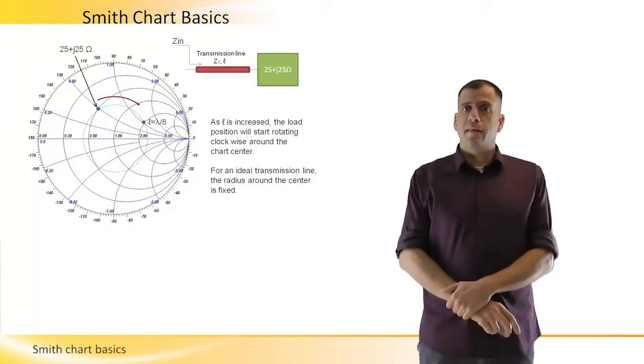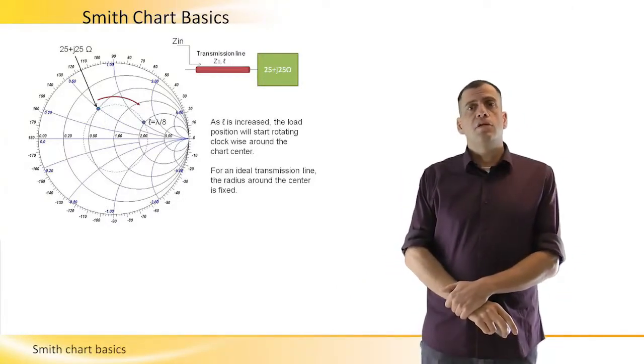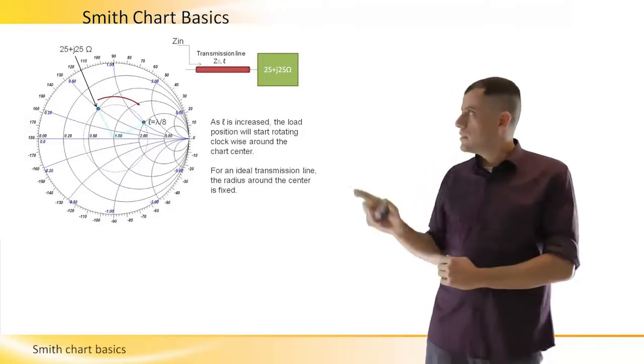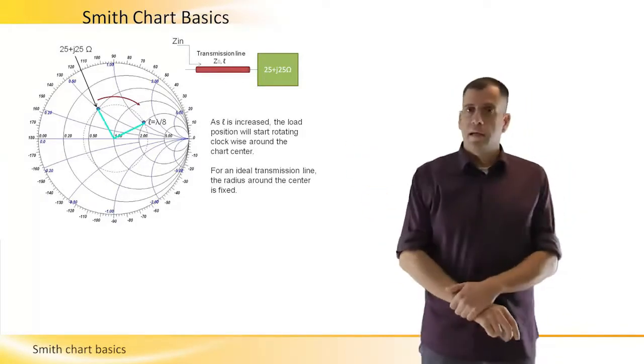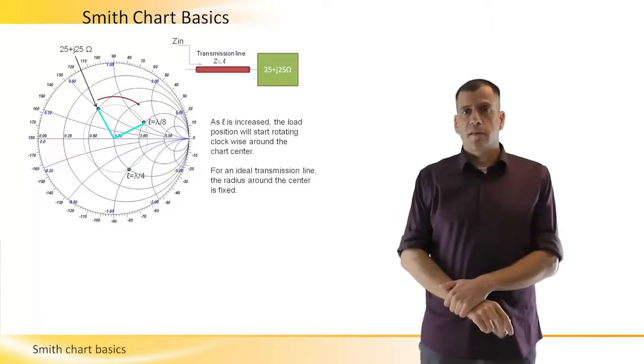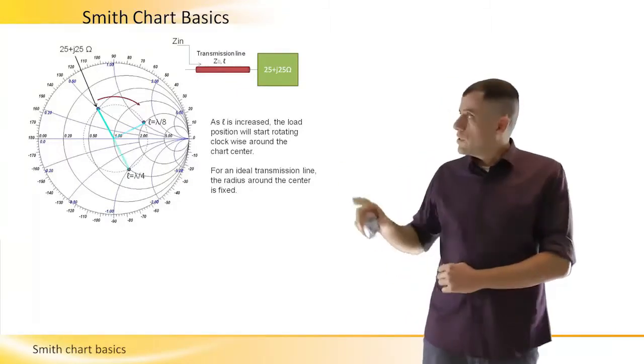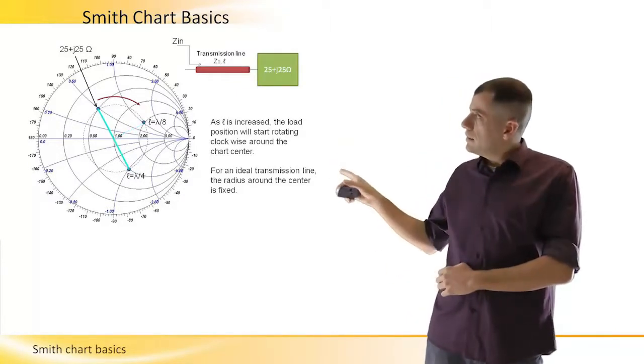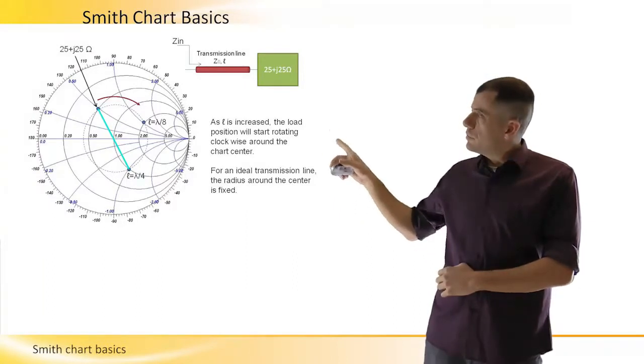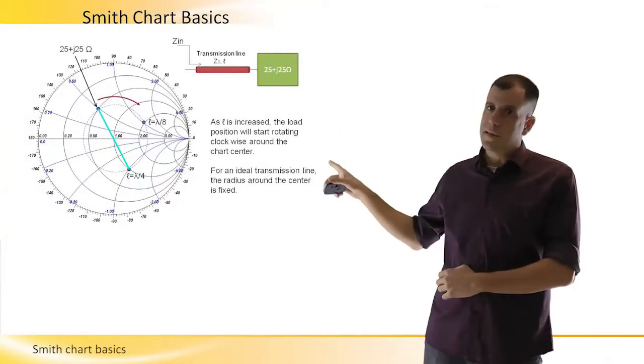After an eighth wavelength, the image has rotated 90 degrees as you can see here. After a quarter wavelength, the image has rotated 180 degrees and actually jumped to the other side of the center of the Smith chart.